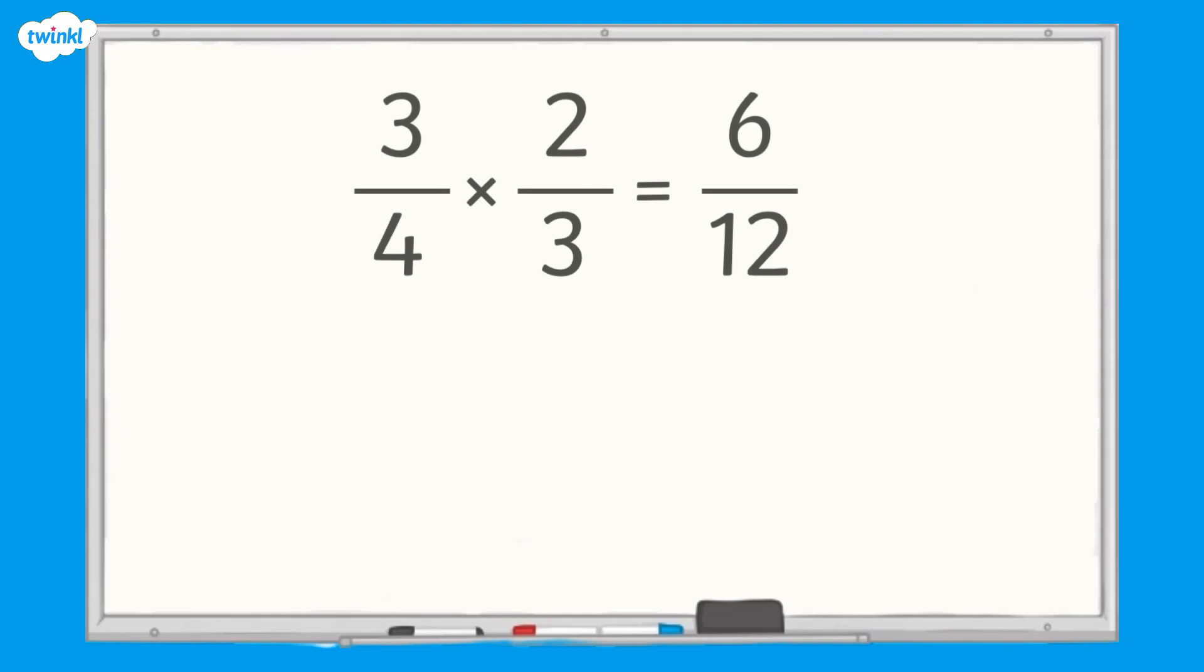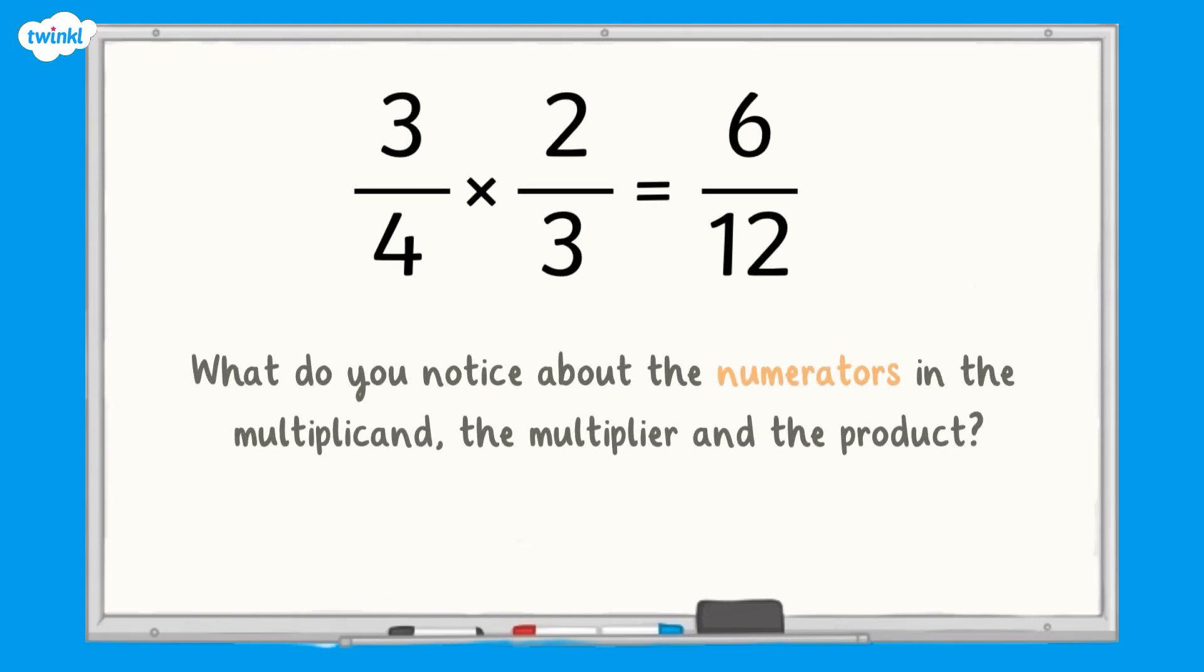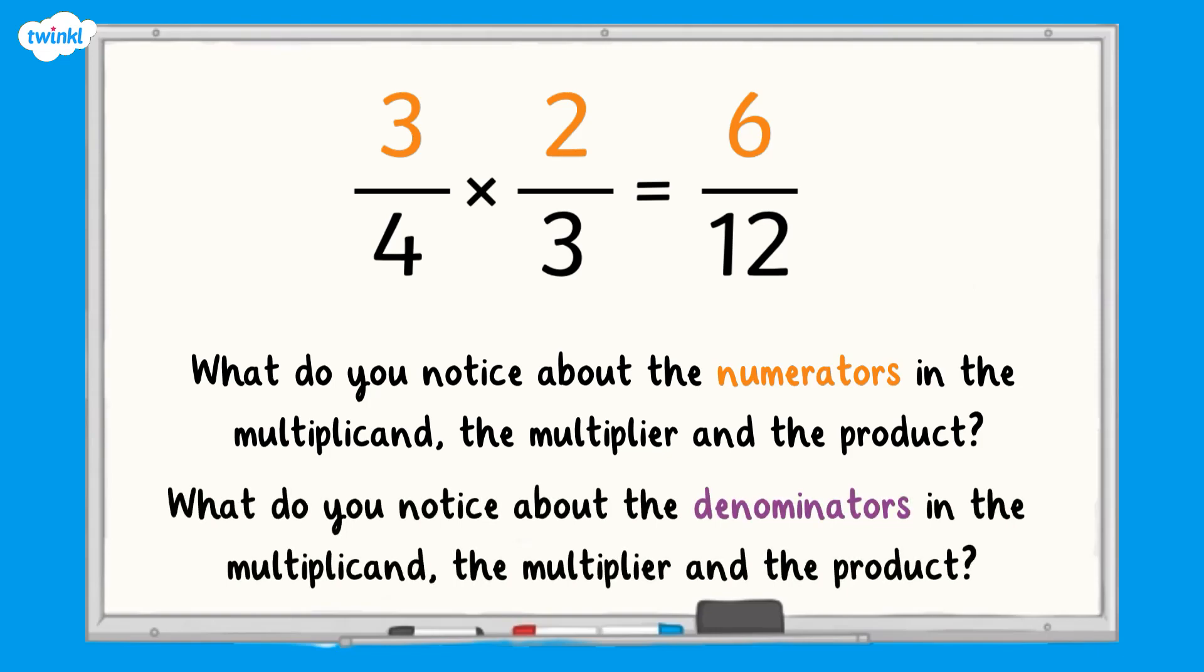Three quarters multiplied by two thirds equals six twelfths. What do you notice about the numerators in the multiplicand, the multiplier, and the product? What do you notice about the denominators in the multiplicand, the multiplier, and the product?